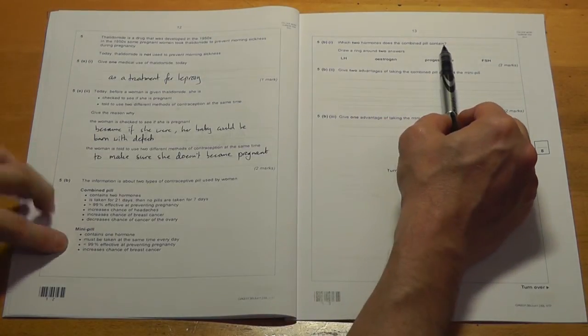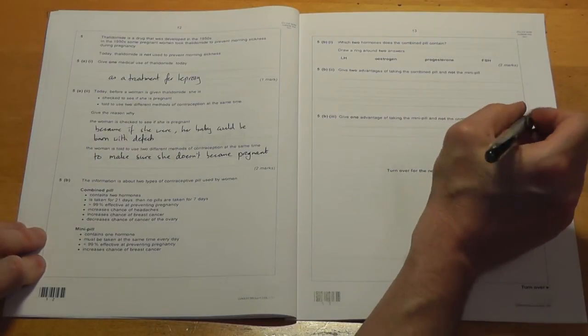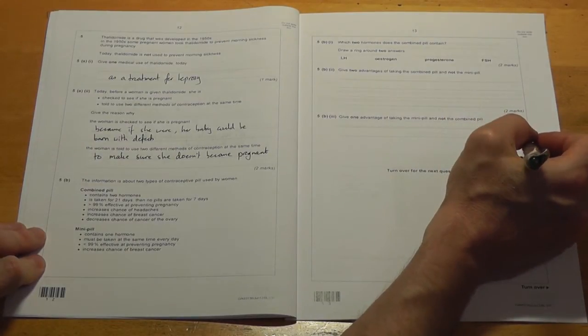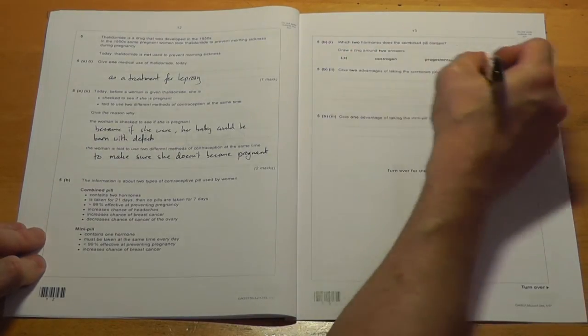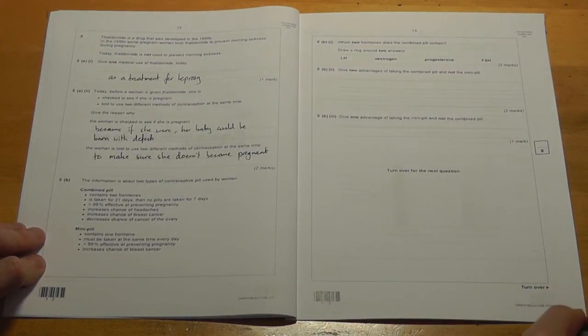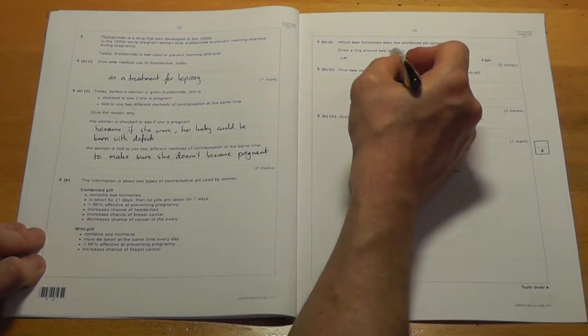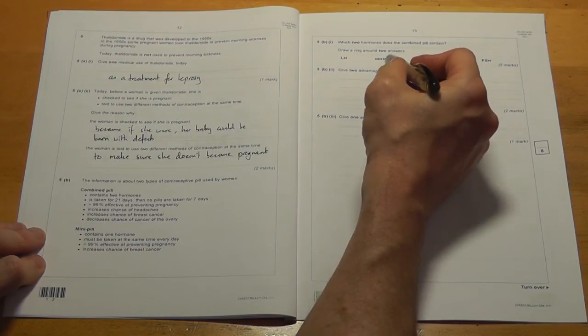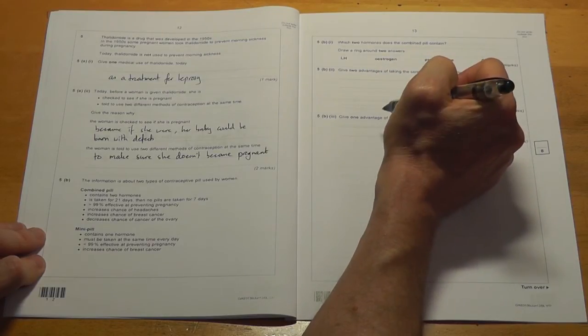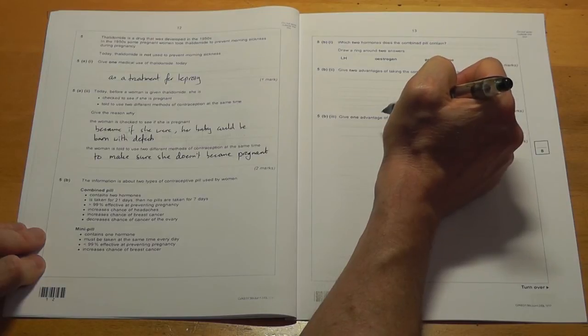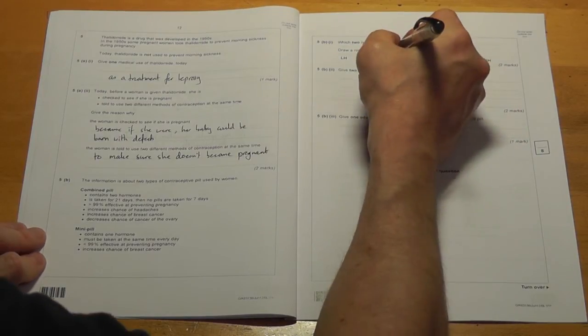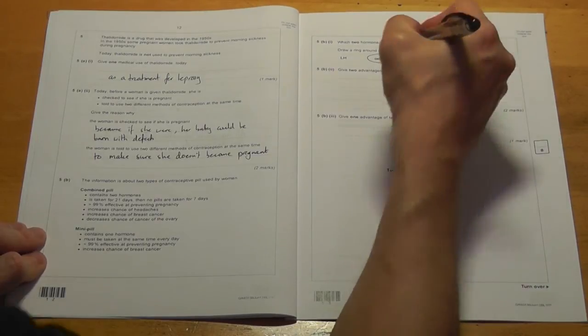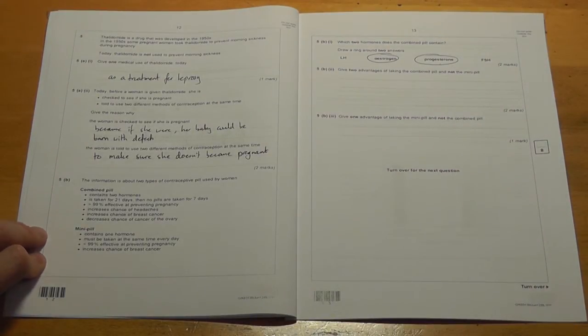Which two hormones does the combined pill contain? Again, you've got to know this one. It's not one that you could actually work out, because all of those are hormones involved in the reproductive cycle. And you've got to draw a ring around two answers. So if you're not sure, it's a guess. If you are sure, you'll know that it's these two. If you only know one of them, put the one that you do know and guess the second, because you can't lose marks for guessing as long as you don't put more than two down.